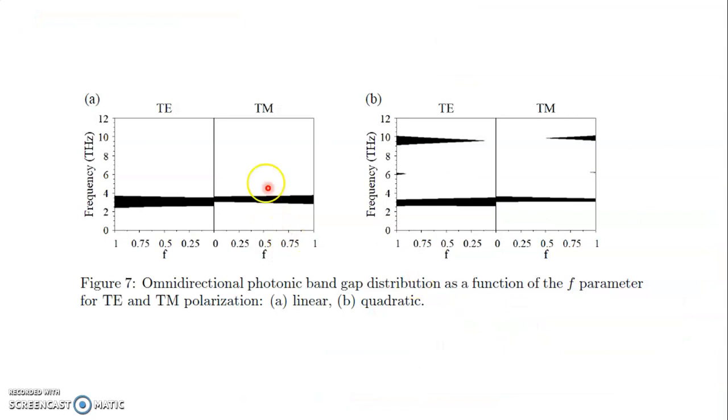Here, we present the shape of these omnidirectional band gaps with the f parameter and for central values of f, we have three omnidirectional photonic band gaps for the quadratic case. These are all conclusions.